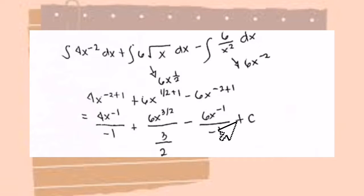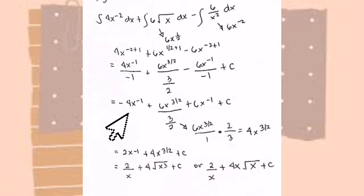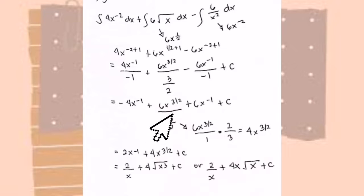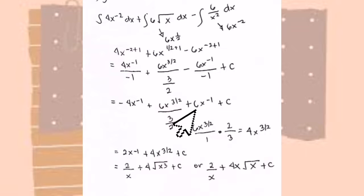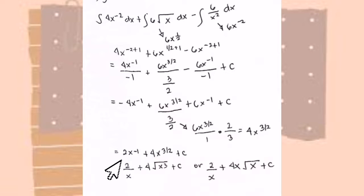We always place C at the end. To remove the negative in 4x raised to negative 1, it becomes negative 4x raised to negative 1. Plus 6x raised to 3 halves over 3 halves. Since the denominator for the last term is negative, minus becomes plus, giving plus 6x raised to negative 1 plus C. We have like terms: negative 4x raised to negative 1 and positive 6x raised to negative 1, which combine to give 2x raised to negative 1.